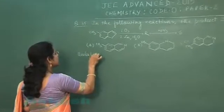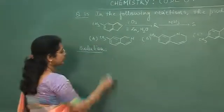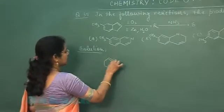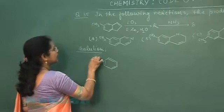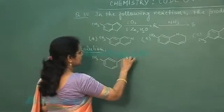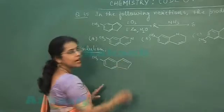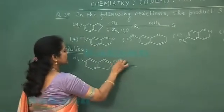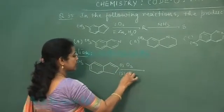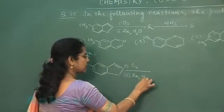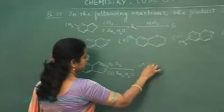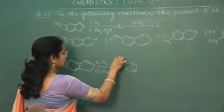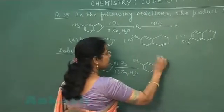Let us write the equation and then find the correct answer. This is the reactant. First condition is given and this is reductive ozonolysis. This ring will remain intact.